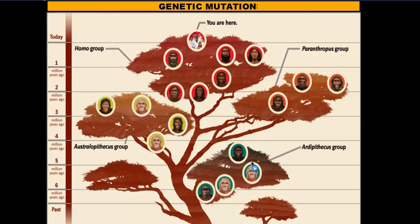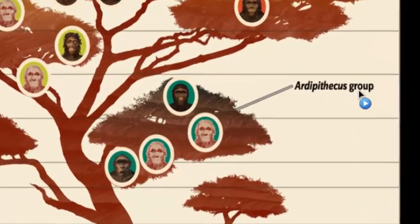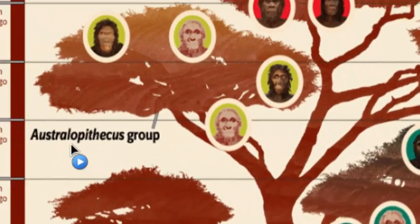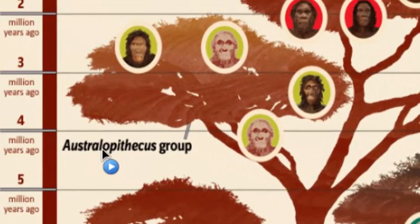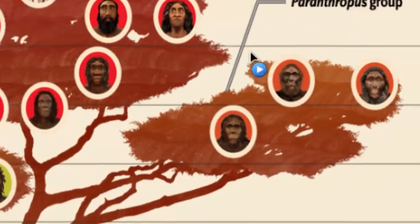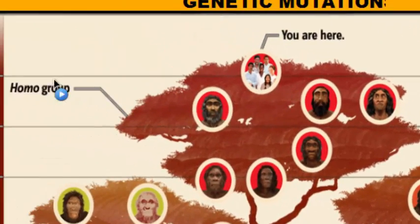As you may know, humans evolved from a common ancestor. And as a result, over time, that DNA has changed. Because of those changes in DNA, we started to create different groups based on different characteristics. So we have the Ardipithecus group, then the Australopithecus group, the Paranthropus group, and then the Homo group, which we reside in.